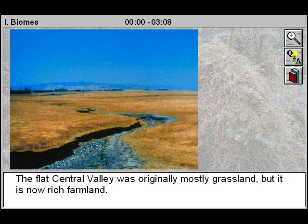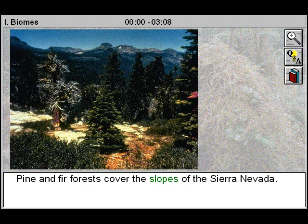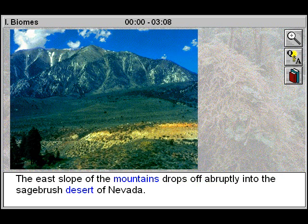The flat central valley was originally mostly grassland, but it is now rich farmland. Pine and fir forests cover the slopes of the Sierra Nevada. The east slope of the mountains drops off abruptly into the sagebrush desert of Nevada.